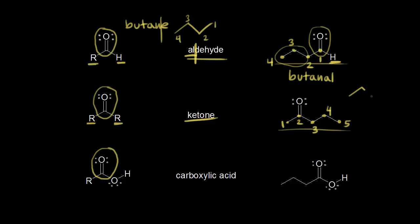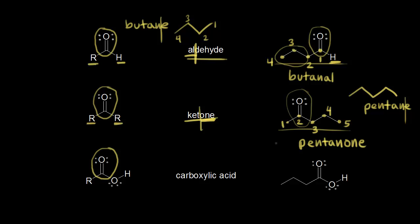A five-carbon alkane is called pentane. A ketone has an -one ending, so -one indicates the presence of a ketone. We're going to lose the E from pentane and add -one, so this would be pentanone. We also need to indicate the position of the carbonyl — the carbonyl is at carbon two, so we write 2-pentanone. That's because we could draw another molecule where the carbonyl is at carbon three, which would be 3-pentanone. So 3-pentanone and 2-pentanone are different molecules, which is why we need to indicate the position of the carbonyl.